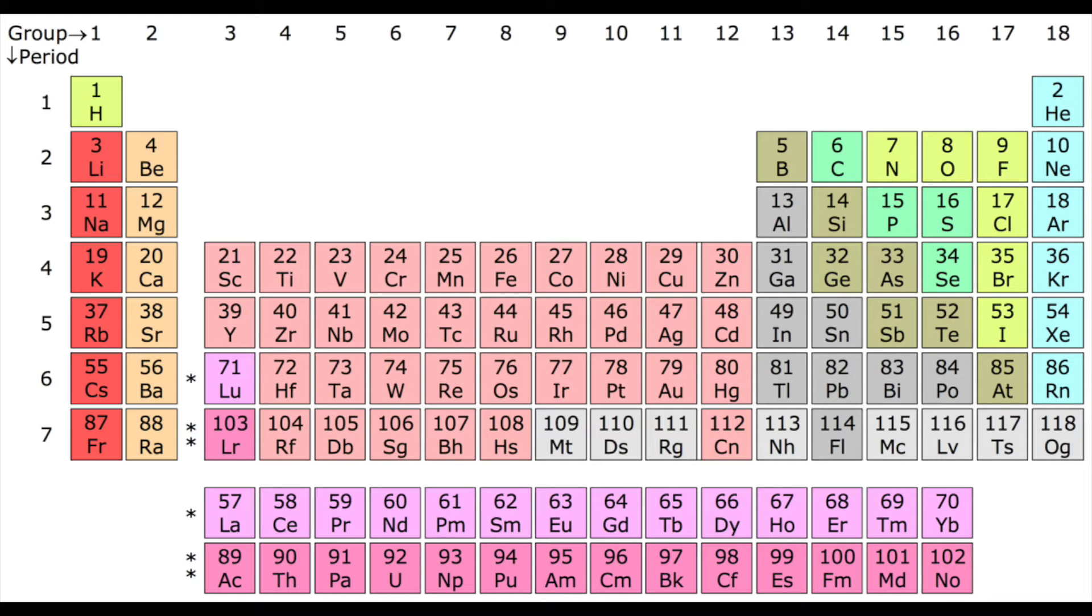This is because they touch this line which goes down quite diagonally and so they have properties of both metals and properties of nonmetals as well. For example if you see things like carbon, nitrogen, oxygen, fluorine and neon right at the top, these are all nonmetals whereas things on the other side, lithium, beryllium, sodium, magnesium, potassium, calcium, all of these are metals.